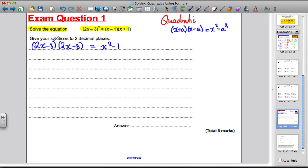Okay, let's multiply out the left-hand side. 2x times 2x is 4x squared. 2x times minus 3 is minus 6x. Minus 3 times 2x is another minus 6x. And minus 3 times minus 3 is a plus 9. That's the left-hand side expanded out. All of that equals x squared minus 1. Okay, let's tidy up the left-hand side. This is 4x squared minus 12x plus 9 equals x squared minus 1.